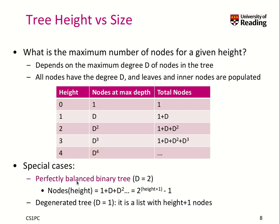When we think of a perfectly balanced binary tree, we often use d equals 2, meaning we have exactly 2 children per node. If you compute the sum, you can convert it into 2 to the power of height plus 1, minus 1. So at a height of 3, we take 2 to the power of 4, which is 16, minus 1 — meaning we can store at most 15 nodes.